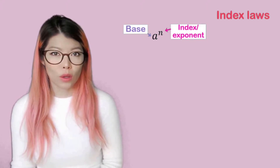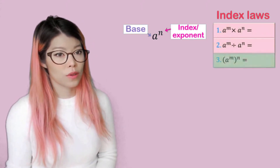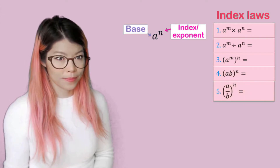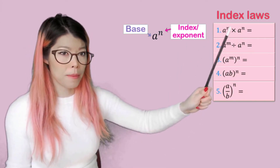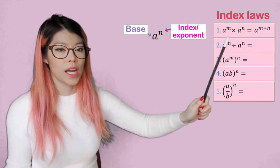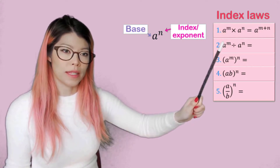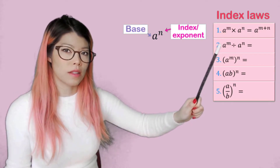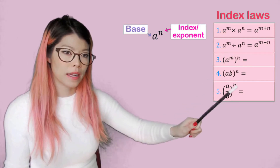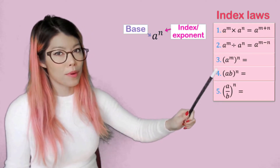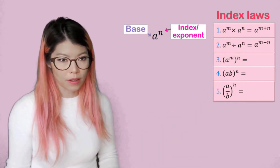So let's revise the index laws. You'll see that we'll go pretty quickly today because you're expected to already know this. So when you have two expressions with the same base and you multiply them, the powers will add. When you have two expressions that are divided with the same base, then the powers will subtract. And when you have them in brackets, anything inside the bracket will have the powers multiplied by the number outside.